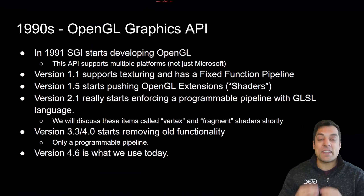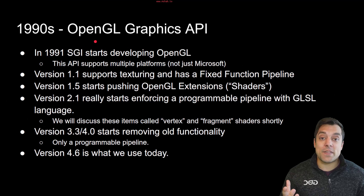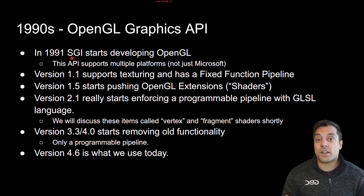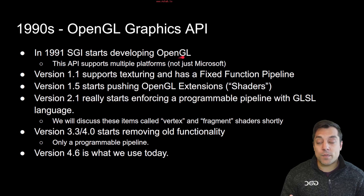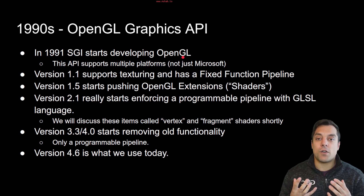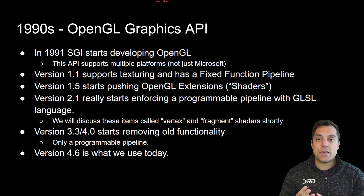This lesson itself deserves a slide because we're going to be doing a little bit of history. OpenGL has a very rich history because it's been around since the 90s. Around 1991 is when a company called SGI started developing OpenGL. The key killer feature of OpenGL initially was that it ran on multiple platforms — Windows, Linux, Mac machines, gaming consoles — you name it, OpenGL could run on it.